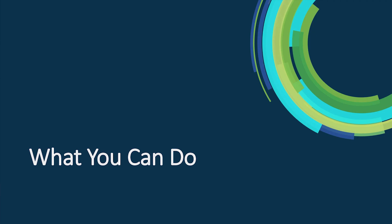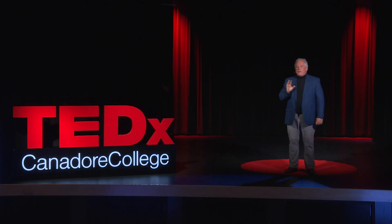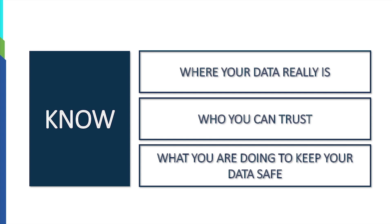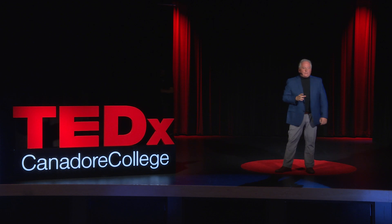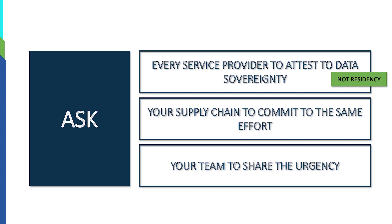So what can you do? There are three things you need to know. First, where your data really is — do you have a firm line of sight to where it's stored, or are you being told it's resident somewhere when it actually isn't? Second, who you can trust — transparency is a big factor. Third, what you're doing to keep your data safe. It has to be an active effort. Ask every service provider to attest to the data sovereignty of what they're providing — not necessarily to change providers, just get clear line of sight on whether they're actually sovereign or if it's just a matter of where data resides.